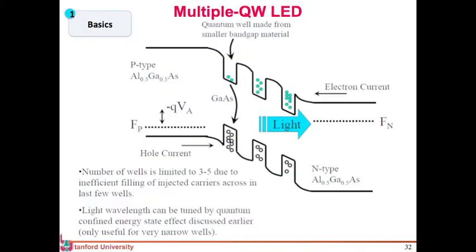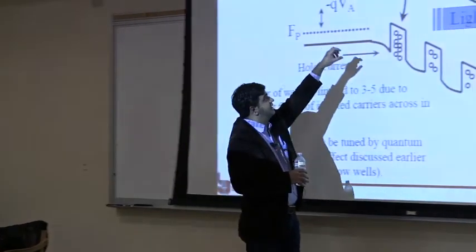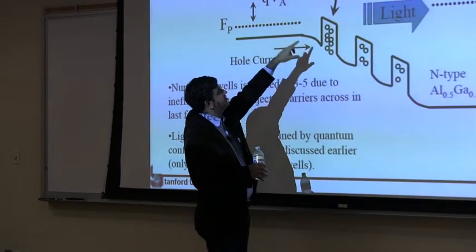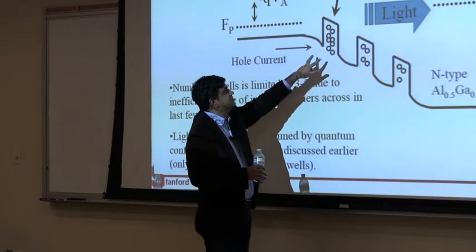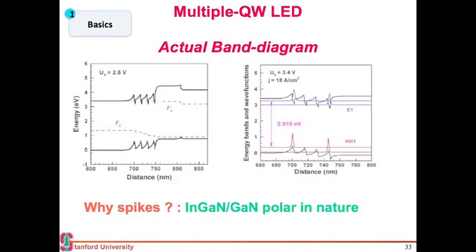People typically have more than one quantum well because they again want to minimize that forward bias current which just flows from your P to N without recombining. What you want to ensure is give your carriers, both your electrons and holes, multiple chances that they can recombine before they escape out. You have these multiple quantum wells in your stack, and typically you have around 3 to 5. If you have laser you have much more of course, but 3 to 5 is what gives you the maximum. If you are going above that it is really overkill. The wavelength also, to some extent, can be tuned by both the stoichiometry of this material that you are making the quantum well from, and also the width of this quantum well. Especially if you make it small, you can again make it slightly higher in band gap.